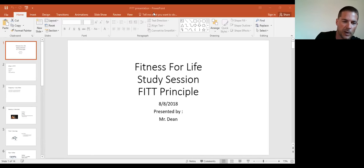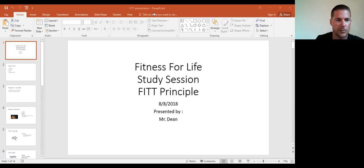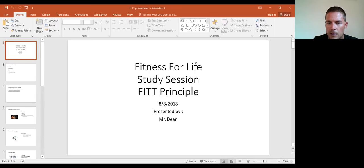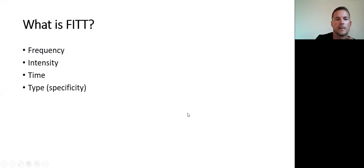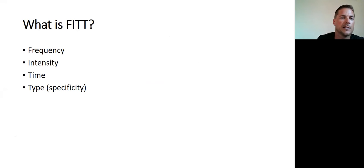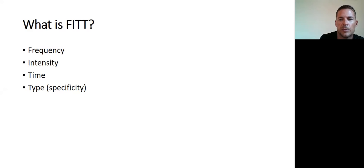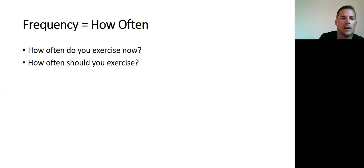There are two parts to this presentation: we're going to go over the FITT principle, and then we're going to design a plan and look at one of the assignments. So — what is FITT? In the first unit they introduce this acronym. F stands for Frequency, I is Intensity, the first T is Time, and the second T is Type. Throughout the presentation we'll dig deeper into what each one means and how it applies to the assignment.